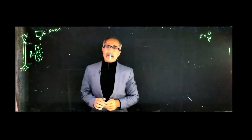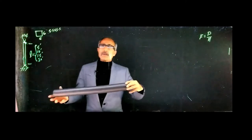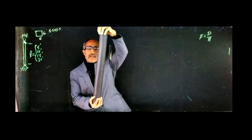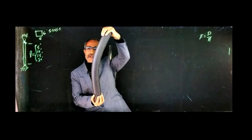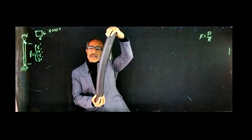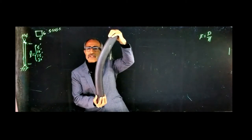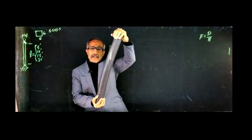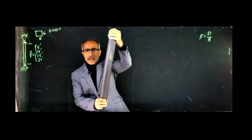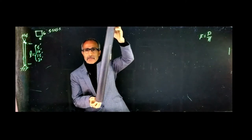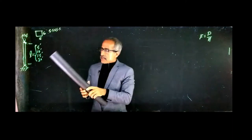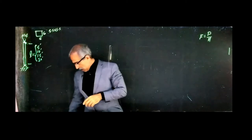But when the column gets longer, that equation no longer applies. There's something called buckling — it's a sideways deflection. If I push on a column, it buckles like that, and that column can fail a lot quicker with less force than what the material is designed for. It makes a big difference how it's supported on the end — whether it is a pin or fixed, or whether you have an intermediate support.